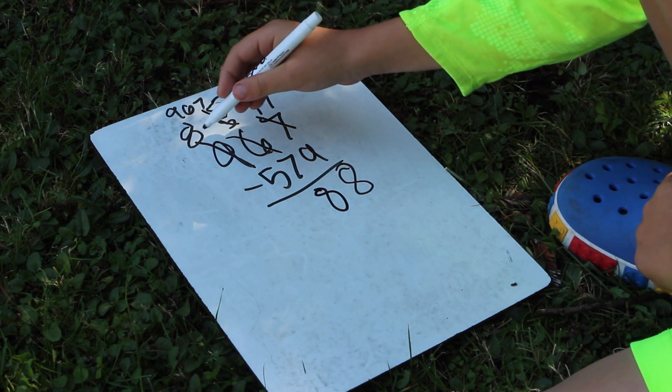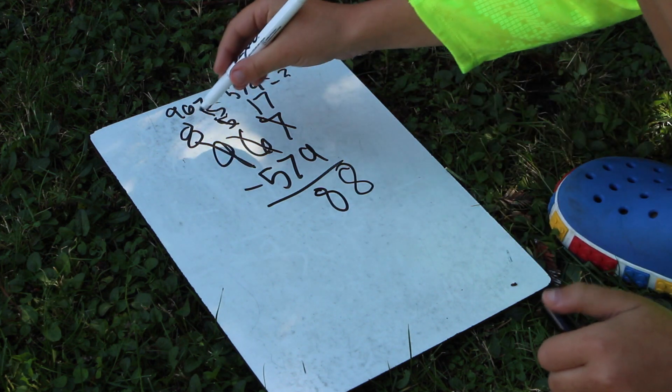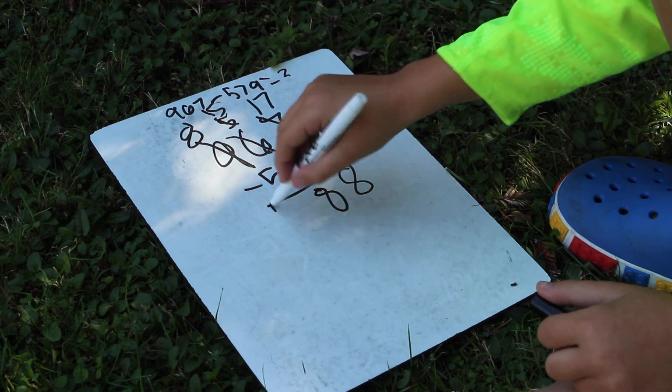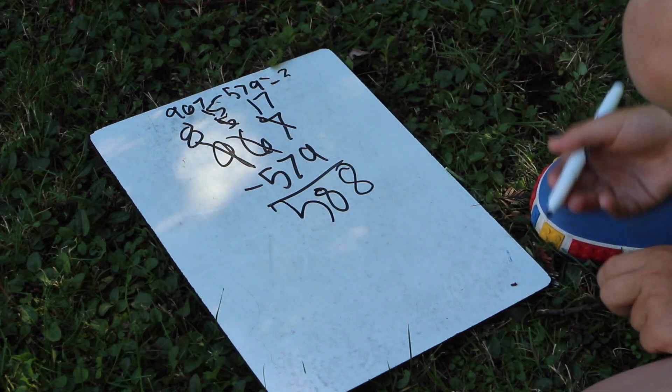And now our final 100 is 8 minus 5 is 3 which is our answer: 388.